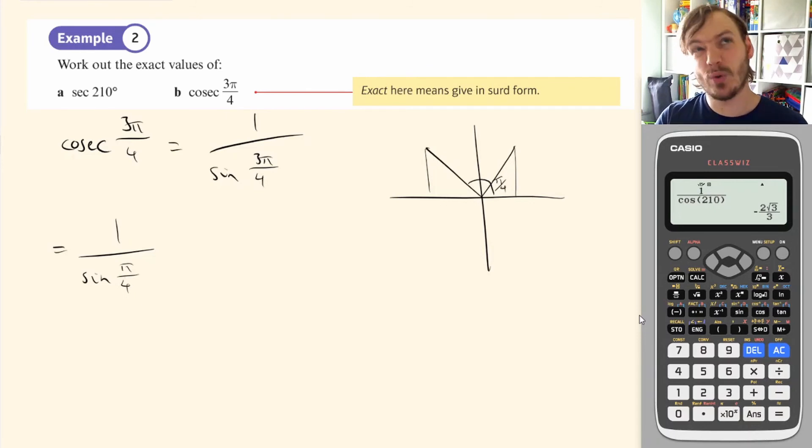Sine of pi over 4, that's equivalent to sine of 45. And that's root 2 over 2. So this is 1 over root 2 over 2, which is 2 over root 2, because it's the reciprocal. And finally, again, we would rationalise this. So this is going to give us 2 root 2 over 2. Oh, they cancel. It's just root 2.